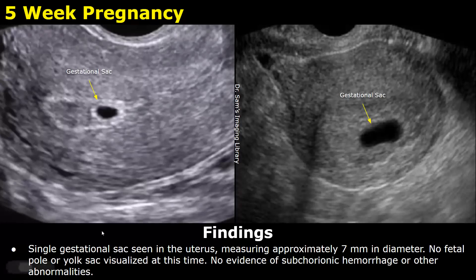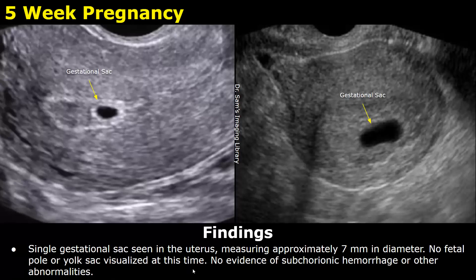We will start by writing a single gestational sac seen in the uterus, and then we can write the size of the gestational sac. After that we can write no fetal pole or yolk sac visualized at this time, because at 5 weeks we do not usually see the yolk sac or the fetal pole. In the end we can write no evidence of subchorionic hemorrhage or other abnormalities.